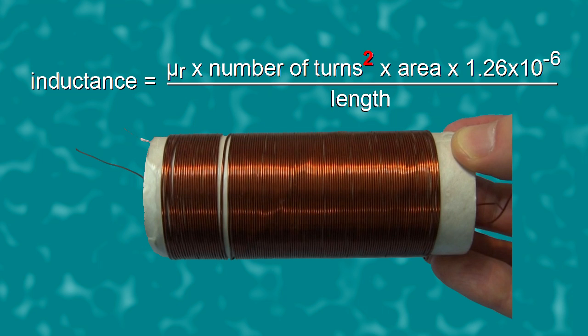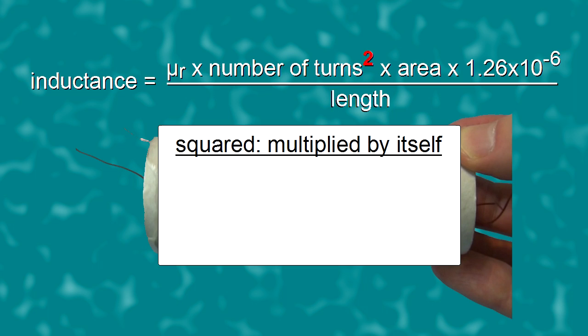One thing you see right away is that the number of turns is squared. That means whatever number you put there will be multiplied by itself to get a much larger number. 2 times 2 is 4, 3 times 3 is 9, 10 times 10 is 100. So squaring the number of turns can make a larger number, which can have a large effect on the result.